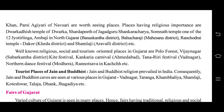Places having religious importance are Dwarka and the temple of Dwarka, Sharda Peeth of Jagat Guru Shankaracharya, Somnath Temple — one of the twelve Jyotirlingas of India — Ambaji in North Gujarat in Banaskantha district, Bahucharaji in Mehsana, and Shamlaji in Aravalli district, which has a very famous temple of Lord Vishnu. These are all worth visiting places.